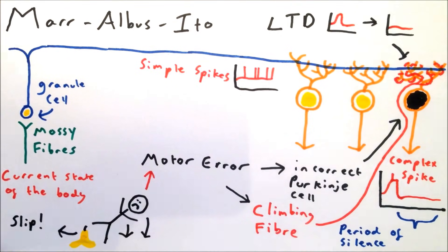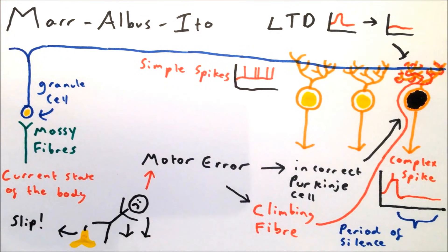Additionally, as the parallel fiber and the climbing fiber have been active simultaneously, the parallel fiber synapse undergoes LTD, and the synapse is weakened. This means that in future, that parallel fiber may not stimulate the incorrect Purkinje cell.